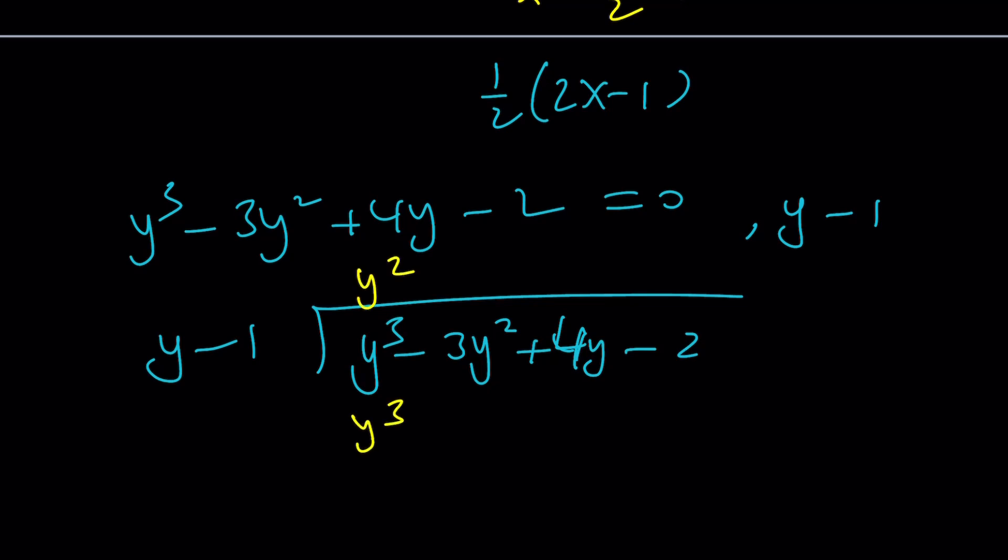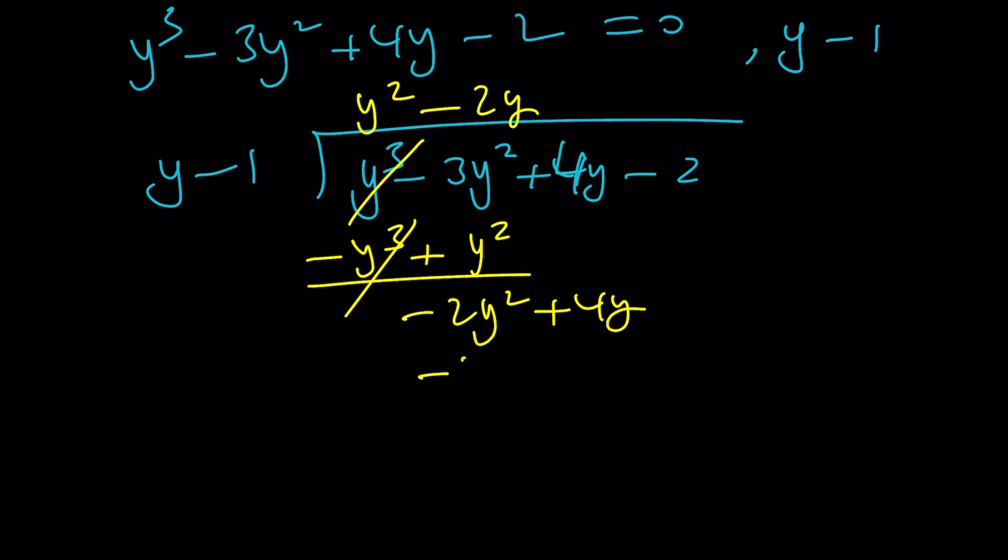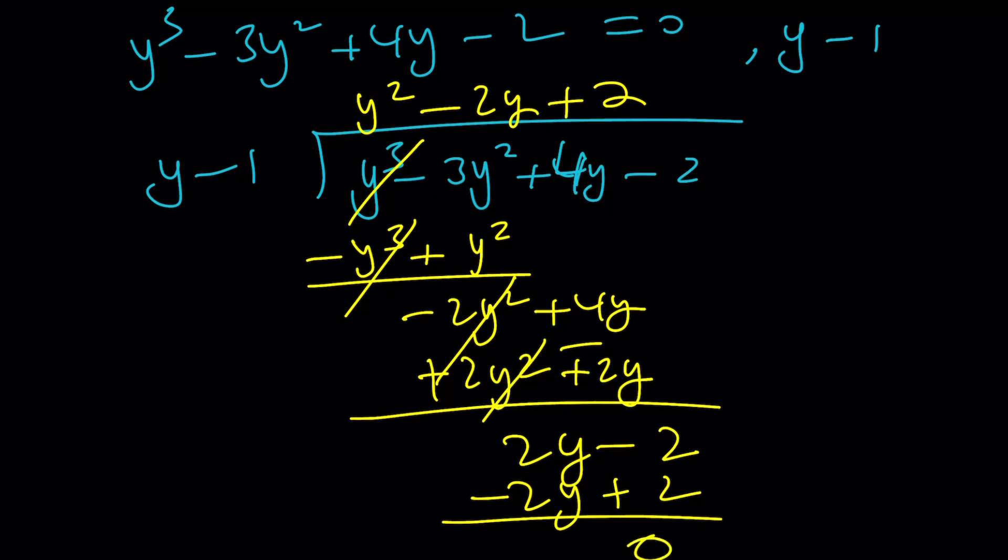y goes into y^3, y^2 times. If I distribute y^2 over y - 1, I get y^3 - y^2. Then negate and add. This gives me -2y^2, bring down the 4y. That means I'm going to multiply next by -2y. If I distribute that, I get -2y^2 + 2y. And then if I negate and add, I get 2y. Finally, bring down the 2. y - 1 goes into 2y - 2, 2 times. And the division is complete, because when you negate, the remainder will be 0.